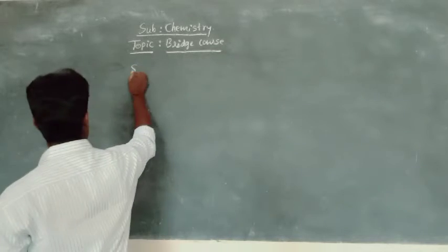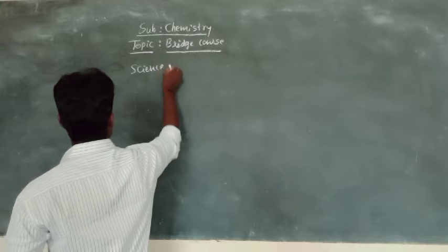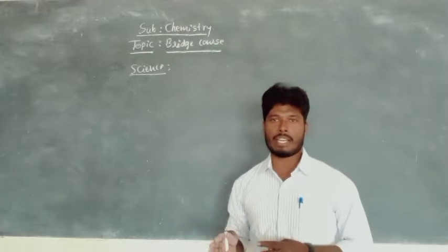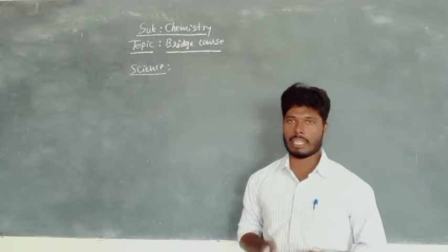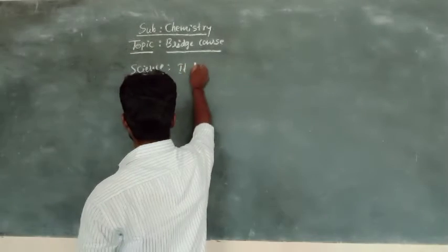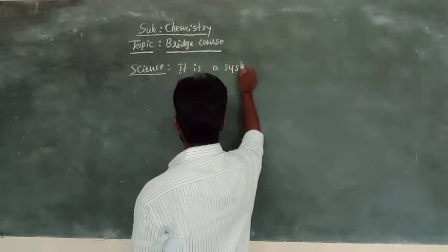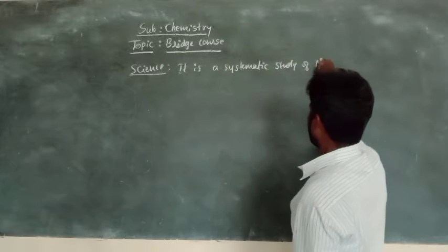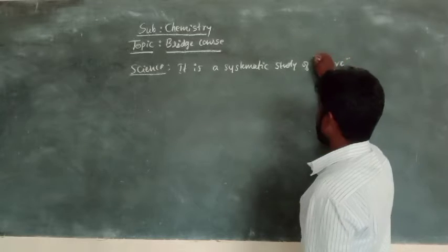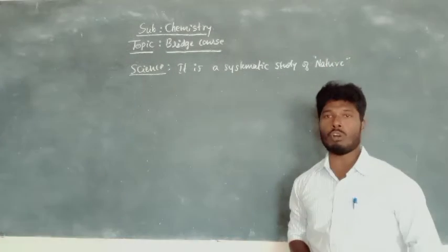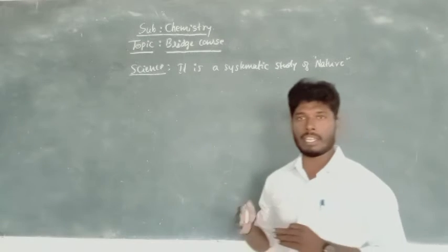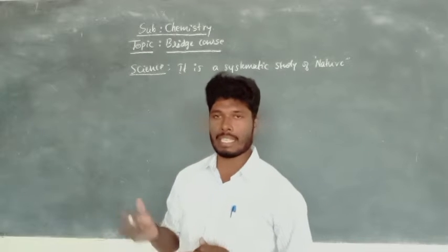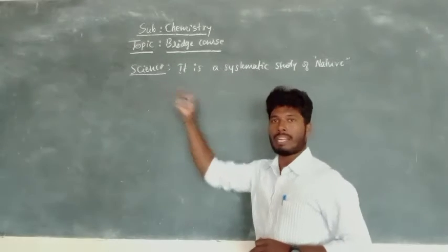So, what is meant by science? Science is a systematic study of nature. Many processes will be happening in nature. To understand all those, there is a systematic way — that we call it science.